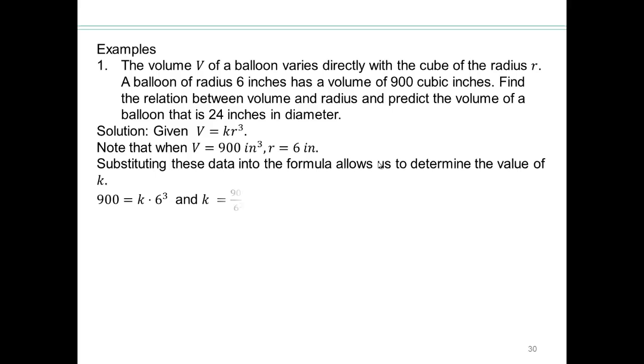So plug that into the formula and we end up with 900 equals k times 6 cubed. Since we want k, divide both sides by 6 cubed and do this division, and we get 4.16 bar. That's the value of that constant k. So now our equation is going to be v equals 4.16 bar r cubed.